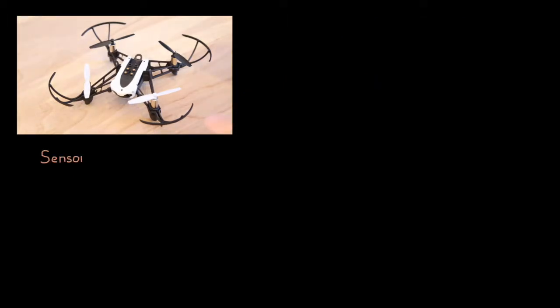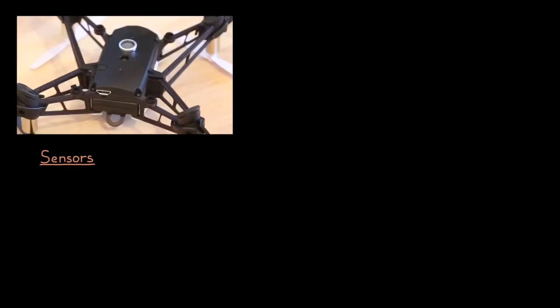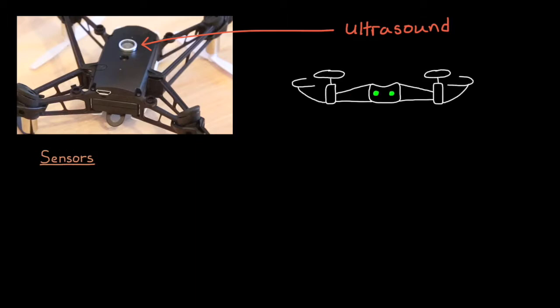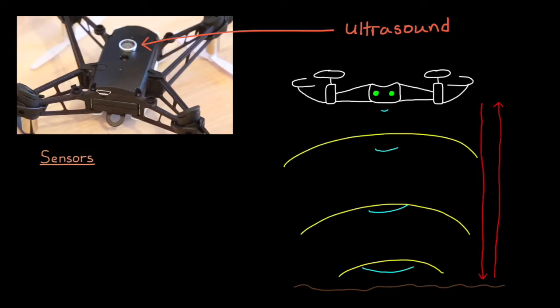We'll start with the sensors. If we flip it over and look at the bottom, there are two sensors that you can see. The one with the grid is an ultrasound sensor that's used to measure vertical distances. It sends out a high-frequency sound pulse and measures how long it takes that pulse to bounce off the floor and return back to the sensor. From the measured time, distance between the floor and the drone can be calculated, at least up to about 13 feet in altitude. After that, the reflected sound is too soft for the sensor to pick up.